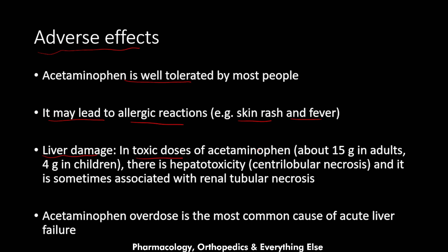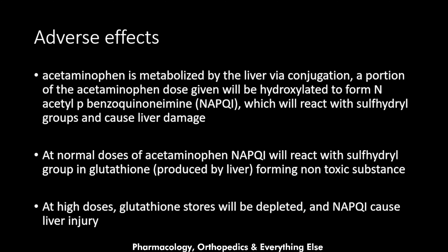In toxic doses — approximately 15 grams in adults and 4 grams in children — there is hepatotoxicity in the form of centrilobular necrosis, sometimes associated with renal tubular necrosis. At those doses there is liver damage and potentially renal damage. It is very important to know that acetaminophen overdose is the most common cause of acute liver failure.